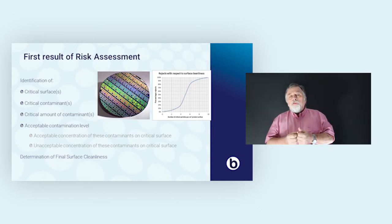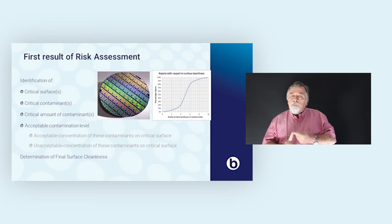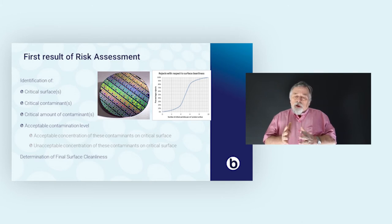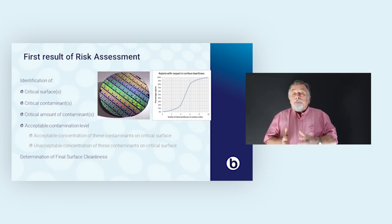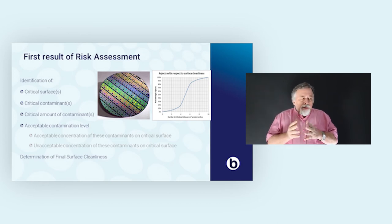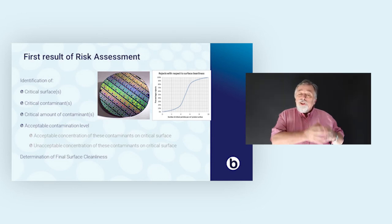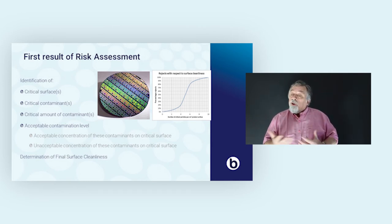The result of a risk assessment in the first phase is an overview of critical surfaces of the product, critical contaminants, critical amounts of contaminants, and the acceptable level of contamination. You have to find the right balance, because the less you accept, the more difficult it will be to make your product. This information is used to determine the final surface cleanliness of your product, which in turn determines what your initial surface cleanliness should be before you start processing — and the difference between those two is your latitude when you perform your process.